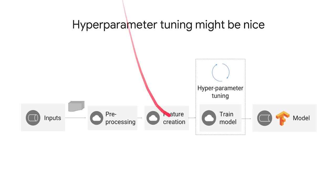As your models get more and more complex, you start wondering whether you picked the right things when you trained the model. You'll have to do some search in the hyperparameter space to see if there are better choices that you could have made. So hyperparameter tuning might be nice.